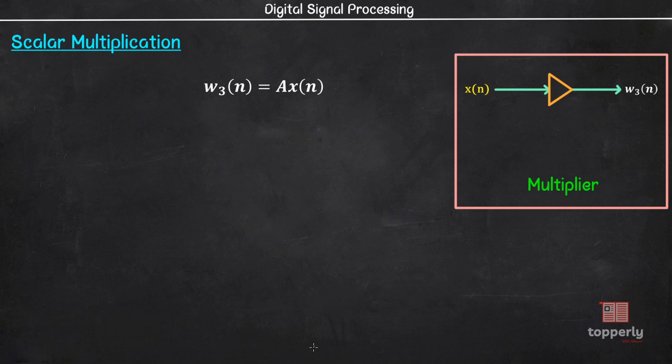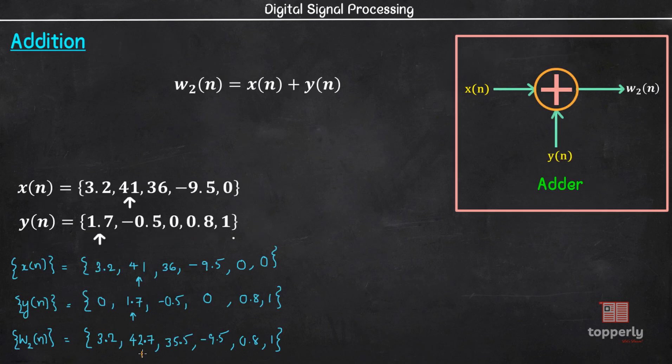As an example, let's take our sequence x and multiply it with a scalar 5. So the new sequence w3 of n will be 3.2 into 5 which is 16, 41 into 5 which is 205, 36 into 5 which is 180, -9.5 into 5 which is -47.5, 0 into 5 which is 0. So this is the new sequence w3 of n. Also, I just remembered that I forgot to mark the n equal to 0 point on this sequence, so I am just marking it here.